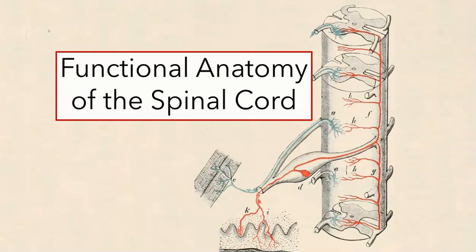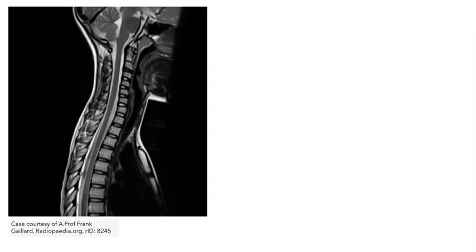In this video, we're going to look at the functional anatomy of the vertebrate spinal cord. Let me begin by showing you an MRI. Here you can see the brain at the top of the figure, the cerebellum, the pons, and the medulla. Continuous with the medulla is a column of tissue — this is the spinal cord.